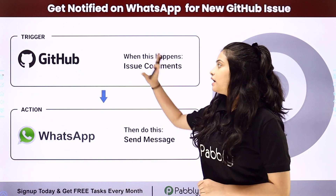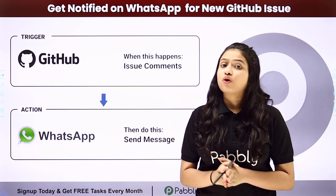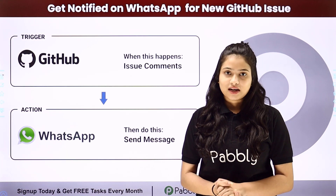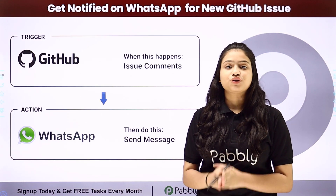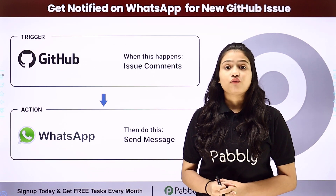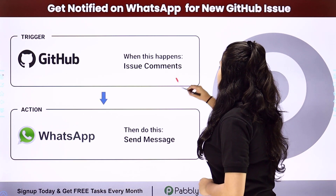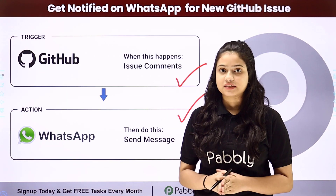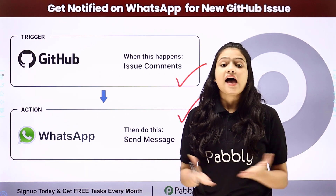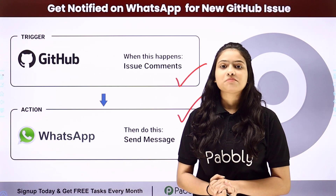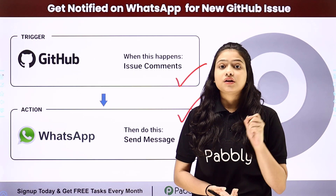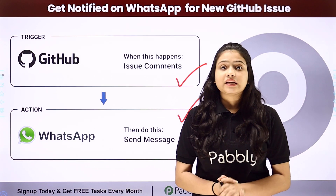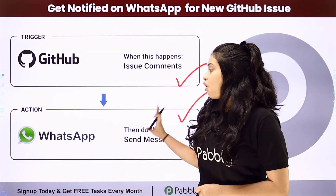For that, we will have to integrate GitHub with WhatsApp. And because they do not have any kind of native integration between them, we are going to use Pabbly Connect, which is an amazing automation and integration platform. We have GitHub in our trigger and in action we can take any application through which we want to send the template message, such as Interact or AISNC. We are going to connect both of them using Pabbly Connect so that whenever a new issue is raised by a team member on GitHub, automatically the admin will get a notification on WhatsApp.